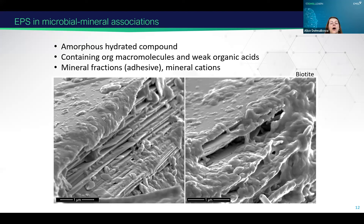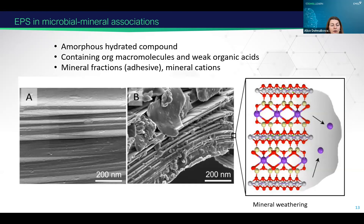You can see organic matter on the mineral — this is biotite which was in the soil for six months, and you can see it's basically covered by soil organic matter. On the left side is the pristine mineral as it started, and within six months it was covered with soil organic matter.